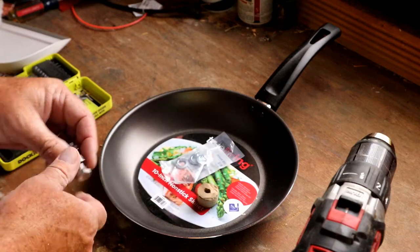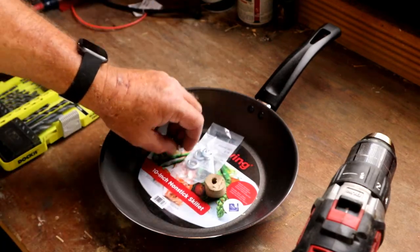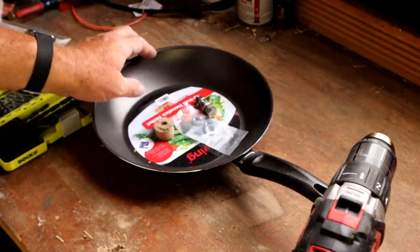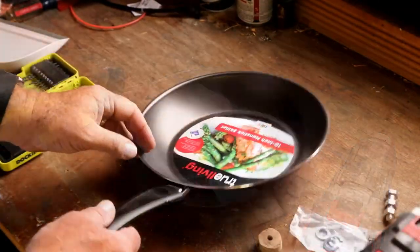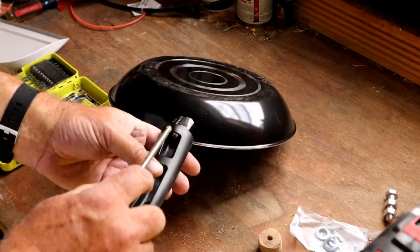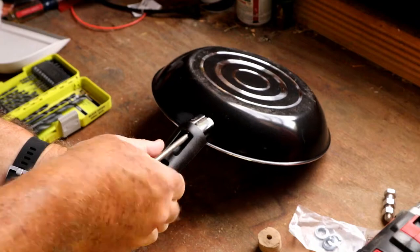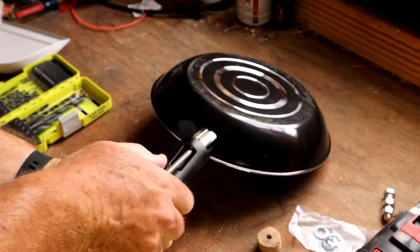So the only thing that we're going to have to do is basically remove the handle and drill a hole in the bottom. Removing the handle was incredibly easy. You just need a screwdriver, unscrew the bolt on the bottom of the handle and basically recycle those two parts.